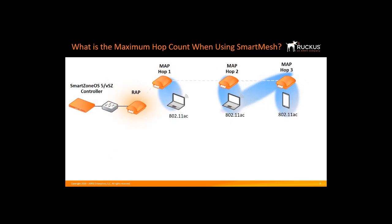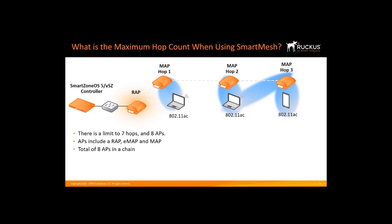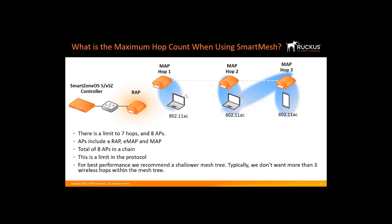What is the maximum hop count when using smart mesh? There is a limit of seven hops and eight APs. The APs include a root AP, an eMAP, and a mesh AP — there can be a total of eight APs in a mesh chain. This is a limit in the protocol itself, and for best performance we recommend a shallower mesh tree, typically no more than three wireless hops within a mesh tree.